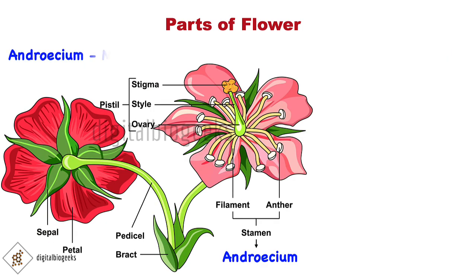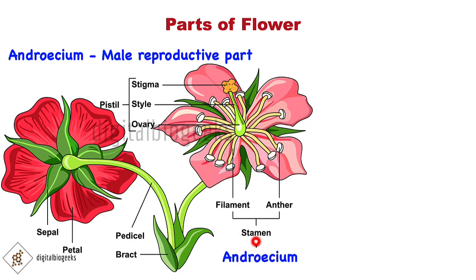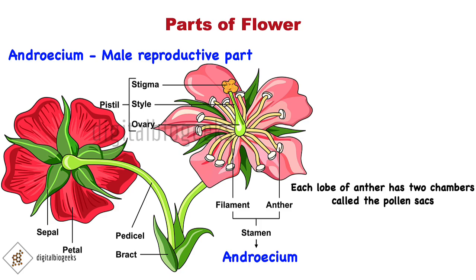Androecium is the male reproductive organ and consists of stamens. Each stamen has a stalk called the filament and an anther. Each lobe of the anther has two chambers called pollen sacs. A stamen that cannot produce pollen is called a staminode — that is a sterile stamen that cannot participate in fertilization, but it has other functions like attracting pollinators, guiding them towards the functional parts, and providing support.